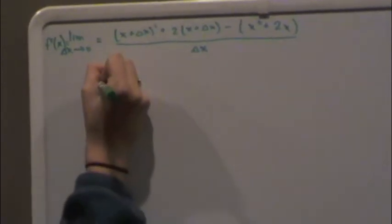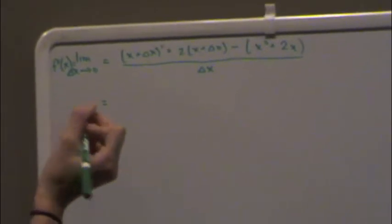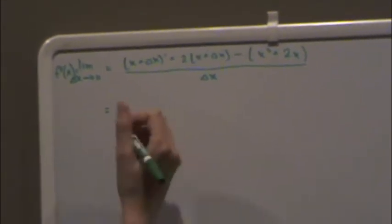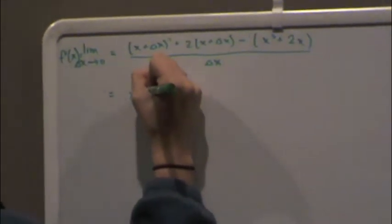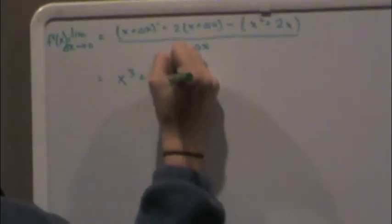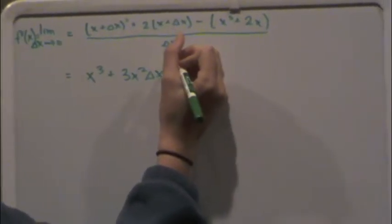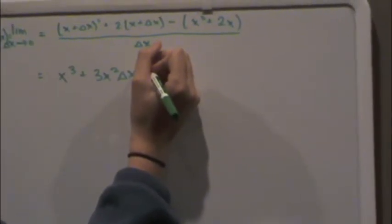So now to solve this, first you would cube x plus the change in x to get x cubed plus 3x squared change in x plus 3x change in x squared.